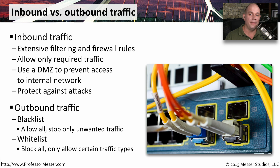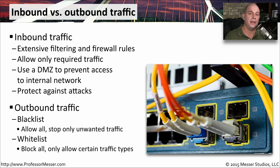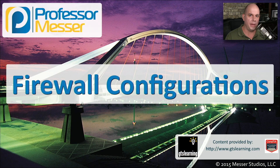When configuring outbound traffic, there are generally two schools of thought. One is to allow all traffic outbound but blacklist things you don't want people to visit — such as a URL category or a known malware site. The other school of thought is the reverse: no traffic is allowed, and you must explicitly whitelist where people are allowed to go. This means more administrative requirements, since you'll constantly be adding to the whitelist, but it ensures you know exactly where people are allowed to go and only allows that traffic outbound through the firewall.